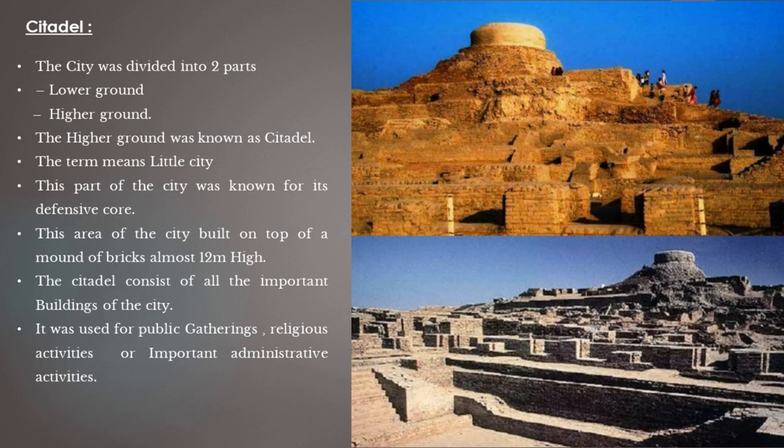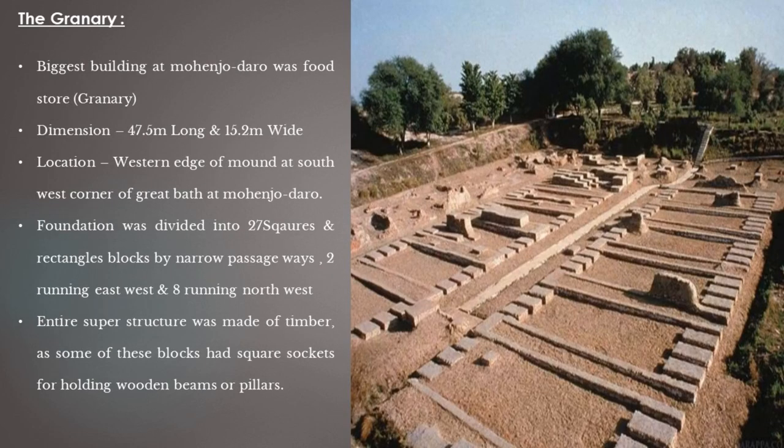The biggest building at Mohenjo-daro was the food store, or granary, with dimensions of 47.5 meters long and 15.2 meters wide. It was located at the western edge of the mound, at the south-west corner of the Great Bath. Its foundation was divided into 27 square and rectangular blocks by narrow passageways — two running east-west and eight running north-west. The entire superstructure was made of timber, with some blocks having square sockets for holding wooden beams or pillars.